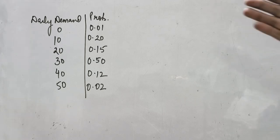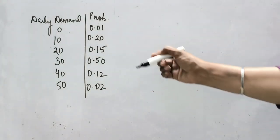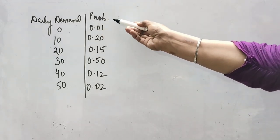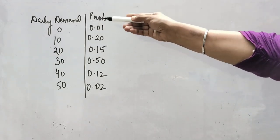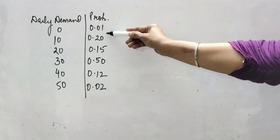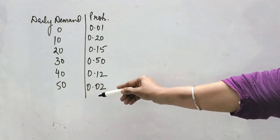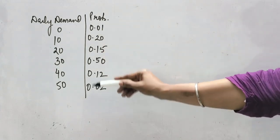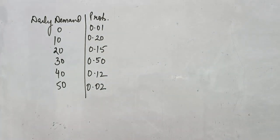Generally the question of simulation will be like this. Sometimes instead of probability, number of days may be given — after daily demand, number of days are given. So you have to create the probability as days divided by total. For example, if there are 1 and 20 days out of a total of 100, then 1 divided by 100 and 20 divided by 100 — converting every value into a probability. In this question, probability is already given.